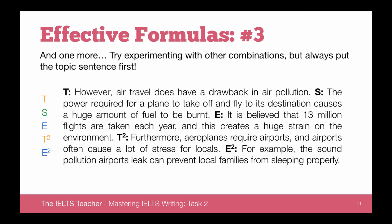Here's another example where we introduce an extra topic — the drawbacks of air travel. 'However, air travel does have a drawback in air pollution.' Very clear. The supporting sentence explains: 'The power required for a plane to take off and fly to its destination causes a huge amount of fuel to be burnt.' Then an example: 'It is believed that 13 million flights are taken each year and this creates a huge strain on the environment.' 13 million flights — a very clear, concrete example.